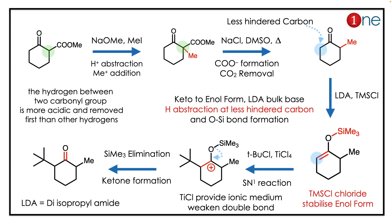The answer lies in the conversion and naming of the reaction. In the first step, you are abstracting the proton — alpha proton abstraction by the base. The nucleophile attacks, forming the bond. Then you're using the salt, which assists the acid formation and CO2 elimination.